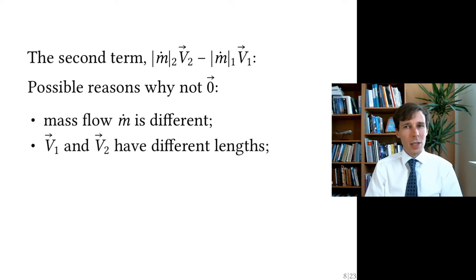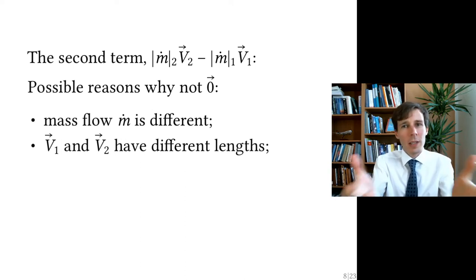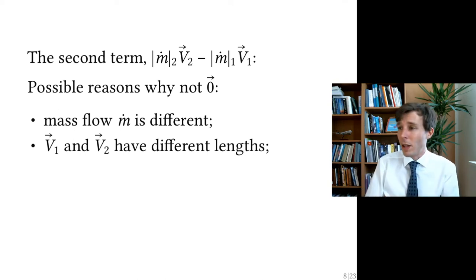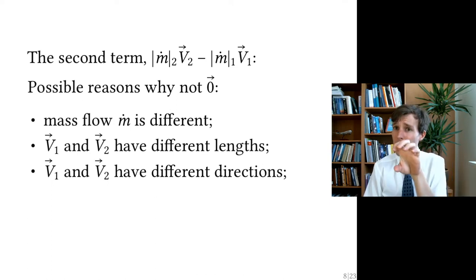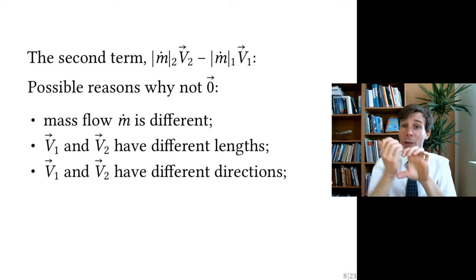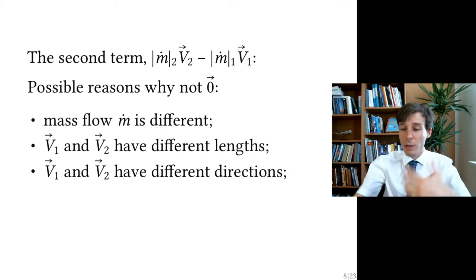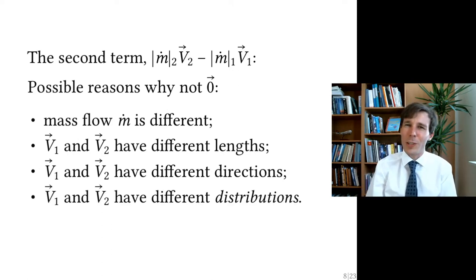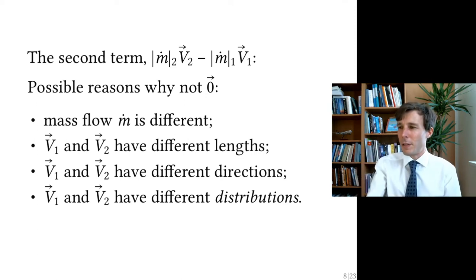You could have velocity vectors with different lengths — a large output velocity and a small input velocity. A jet engine, for example, admits air with low velocity and shoots it out the back with high velocity. Different lengths are equivalent to a net force. You could also have different directions — the same speed incoming and outgoing but in different directions, meaning V1 and V2 are different vectors, resulting in a net force. And you could have different distributions of velocity.